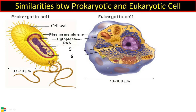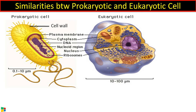DNA is present in both prokaryotic and eukaryotic cells. The region where DNA is located is called the nucleoid region in prokaryotic cells, as it is not surrounded by a membrane. In eukaryotic cells it is called the nucleus, as the genetic material is surrounded by a membrane. Both are having DNA as their genetic material.